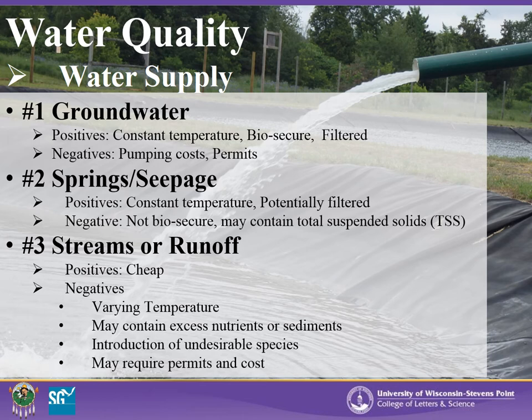Although springs have a constant temperature and may be filtered, they are not biosecure as they may be exposed to bacteria in the soil and air. Springs may also contain a high number of total suspended solids or high turbidity that may negatively affect your fish. Similarly, streams and runoff can bring in excessive nutrients, sediment, or other materials negatively affecting your pond. Water temperature of runoff and stream water is always changing, fluctuating pond temperature and causing stress. Stream supply may also bring in undesirable species and usually requires extra permitting, which may be more costly in the long run. Utilizing any water source besides groundwater may increase biosecurity or contamination risk, introduce aquatic invasive species or fish predators, or fluctuate your water quality, all negatively impacting fish production.